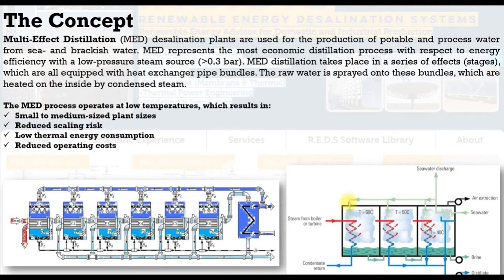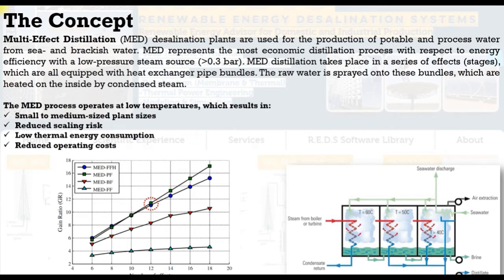This is a parallel feed configuration, where the feed is divided equally between the effects. As we can see, feed is sprayed equally for each effect. The operating temperature is no more than 60 to 70 degrees. After numerous research activities on operation and performance, parallel feed achieves a higher performance ratio or gain ratio compared against other configurations.